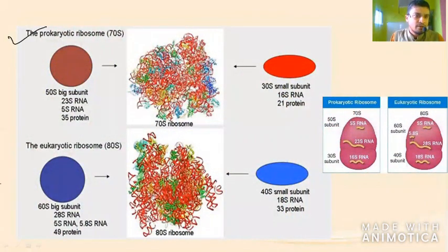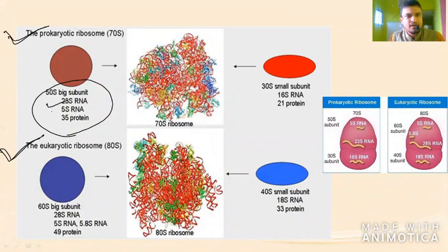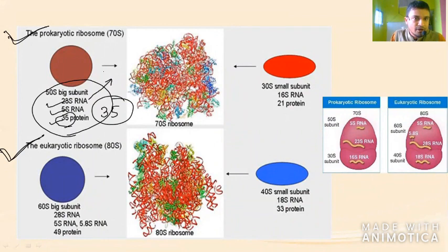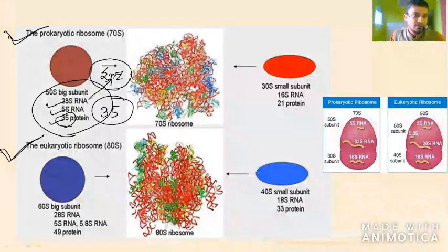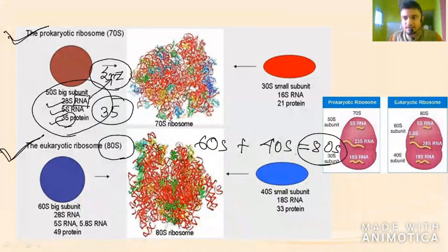Comparing prokaryotic and eukaryotic ribosomes: the ribosome is essentially a clump of RNA and proteins. In the prokaryotic structure you have 23S ribosomal RNA, 5S rRNA, and 35 different types of proteins in the large subunit. The small subunit contains 16S rRNA. For eukaryotic ribosomes, the large subunit is 60S and the small subunit is 40S. Again, 60S plus 40S is not 100S — it is 80S, because it is not an algebraic sum.